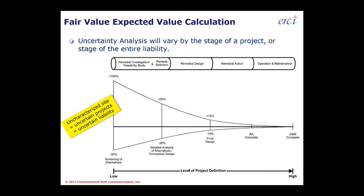If a project is at an early stage or has never been characterized before, the degrees of uncertainty are quite wide around that estimate. As more information comes in about tasks needed to execute a project and as there is better alignment between what a project is and what the liability is — which are not necessarily one and the same — that uncertainty gap gradually diminishes.